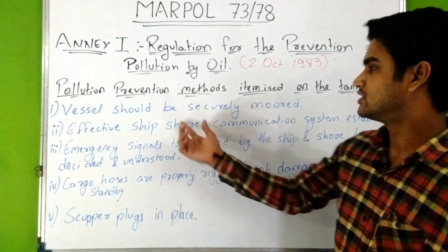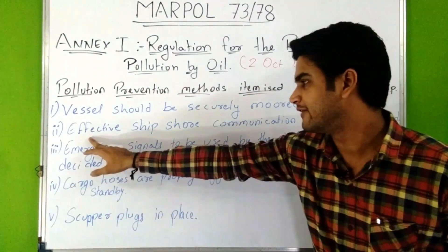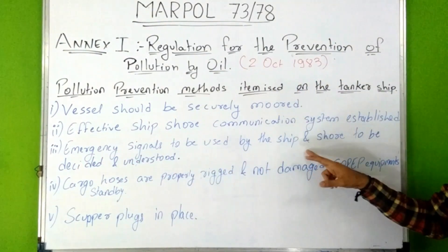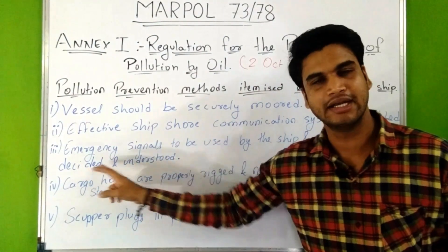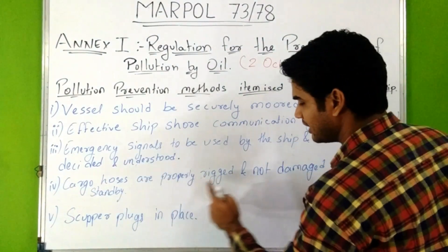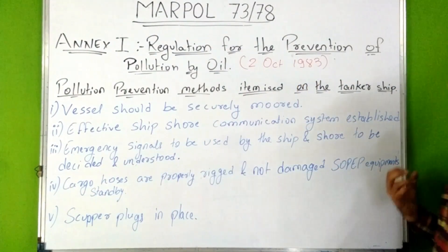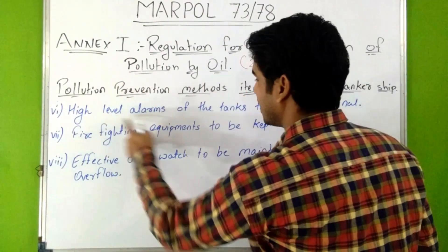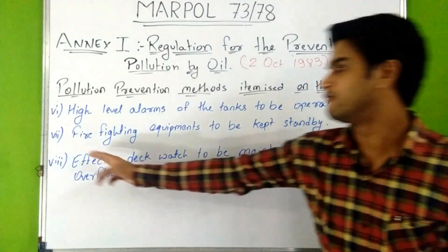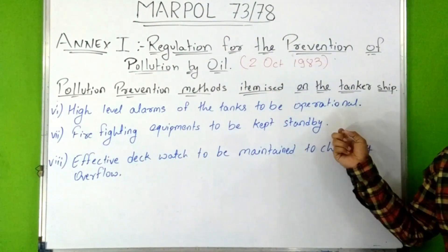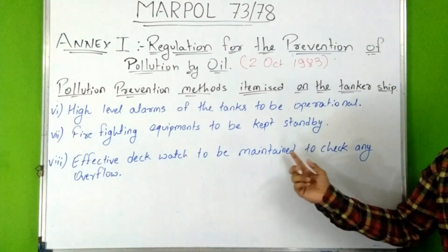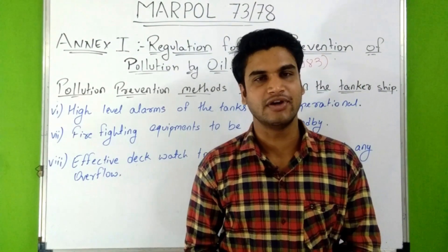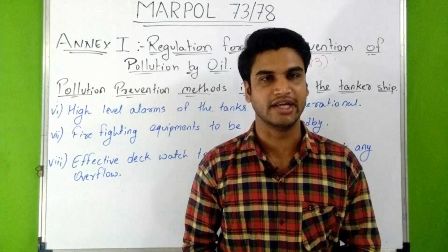The ship-shore safety checklist for pollution prevention on tanker ships includes: vessel should be securely moored; effective ship-shore communication system established; emergency signals to be agreed upon and understood; cargo hoses properly rigged and not damaged; SOPEP equipment on standby; scupper plugs in place; high-level alarms of tanks to be operational; firefighting equipment kept on standby; and effective deck watch maintained to check for any overflow.